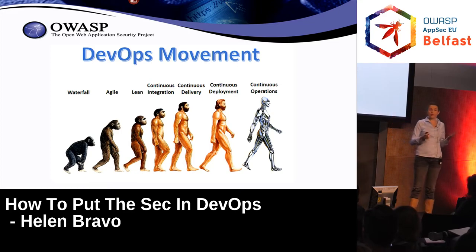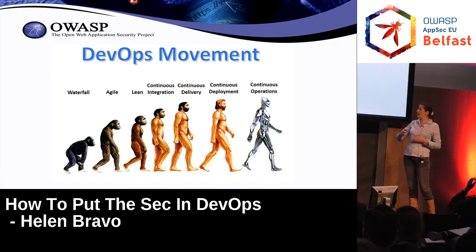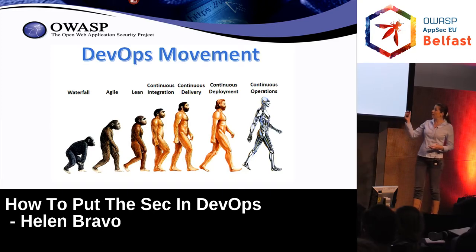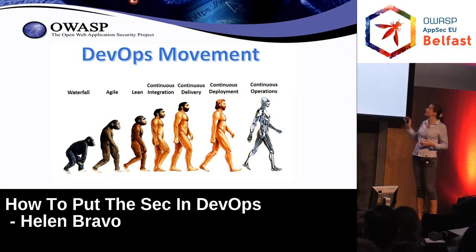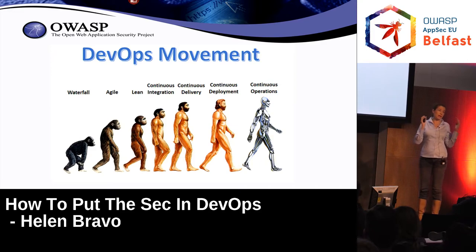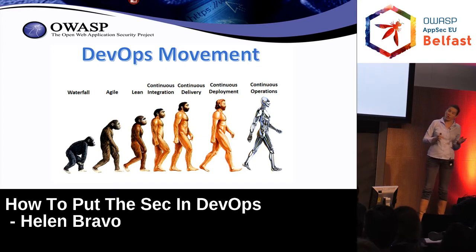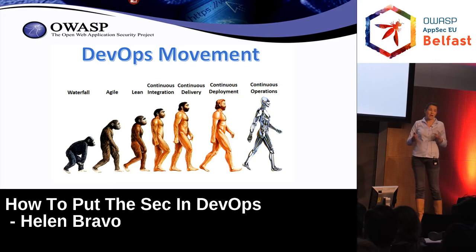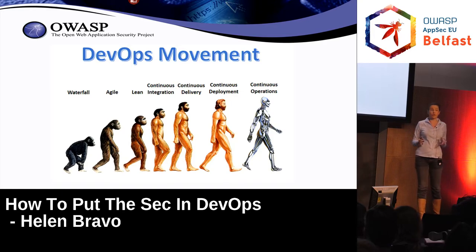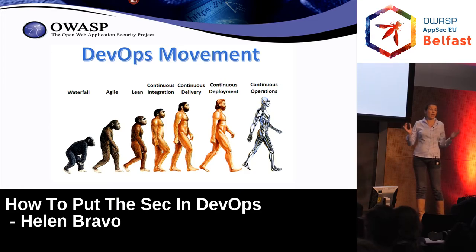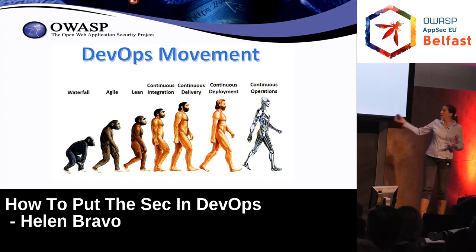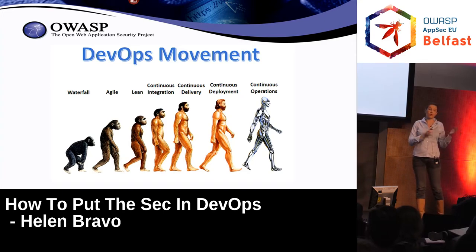We've heard a lot of talks today, some asking how many are in waterfall and how many in continuous deployment. The truth is most projects are somewhere in the middle — and it's not even organization-wide, it's project-specific. Some legacy projects are still releasing every 18 months, and some newer projects are deploying a few times a day.